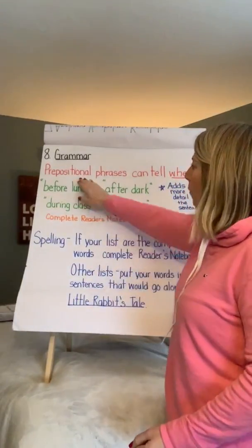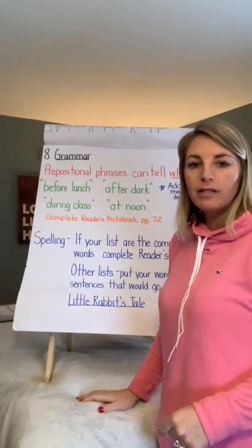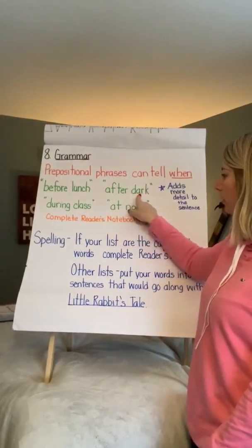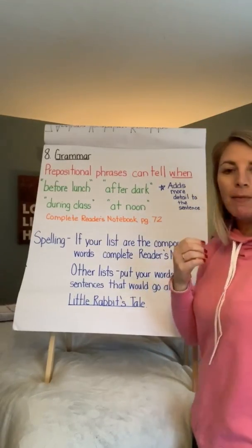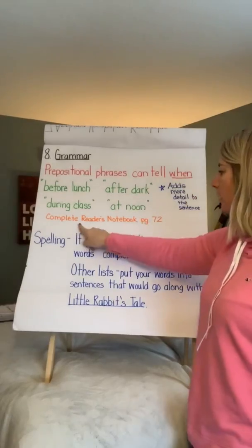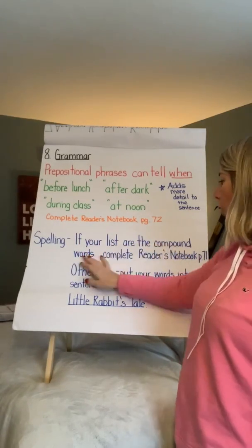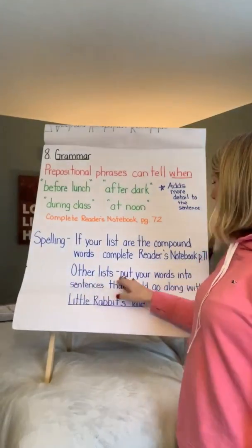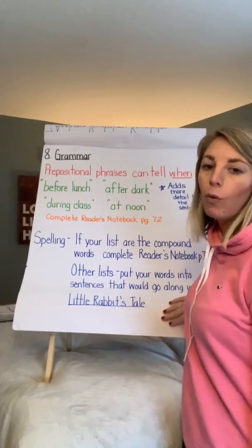Here we are for grammar — prepositional phrases can tell when. Yesterday we talked about where, as in 'under the table.' Today we're going to talk about when. Here are some examples: before lunch, after dark, during class, at noon. This adds more detail to the sentence — I'm able to picture the sentence more by giving it a prepositional phrase telling when. Please complete Reader's Notebook page 72. For spelling, if your list is the compound word list, please complete Reader's Notebook page 71. All other lists — put your words into sentences that go along with 'Little Rabbit's Tale,' so have a little fun with it and see what sentences you come up with.